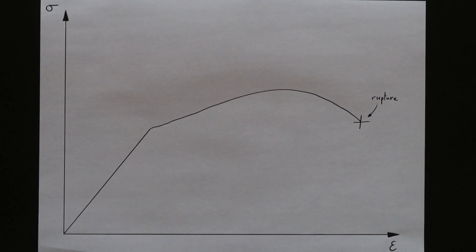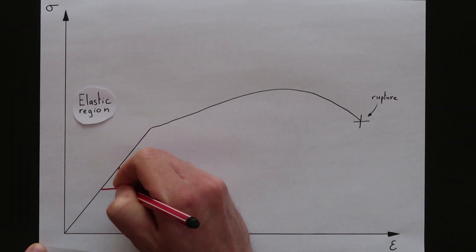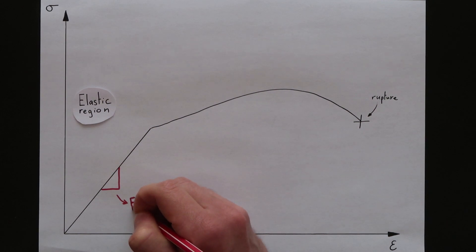All right so now that we have a basic understanding of stress, strain and the Young's modulus we can now look at the stress-strain curve. This graph is usually divided in two regions: the elastic region and the plastic region. Let's first only focus on the elastic region. Since the Young's modulus is equal to stress over strain it is represented by the slope of the curve in the elastic region. The steeper the slope the greater the Young's modulus.